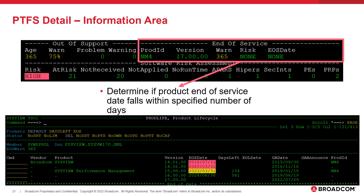Finally, the end of service section of the information area shows the end of service date, if available, for a given product. If the end of service date is in the past, the risk field will be marked high. Similarly to the out of support section, the warn field allows Sherman to configure the number of days until the end of service date is reached that will be considered a medium risk level. This helps Sherman identify products that are running out of support versions. By selecting anywhere in the end of service section, Sherman can drive to the prod life command filtered to only show products with a matching product ID. This command can help Sherman identify product lifecycle information about the different versions of the product.